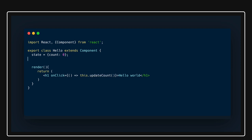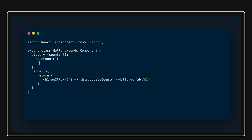I'll define 'updateCount' here. What this function does is update the state. We do 'this.setState', where you can access the previous state. You return the previous state plus one — so something like: return an object where 'count' is 'previousState.count + 1'.